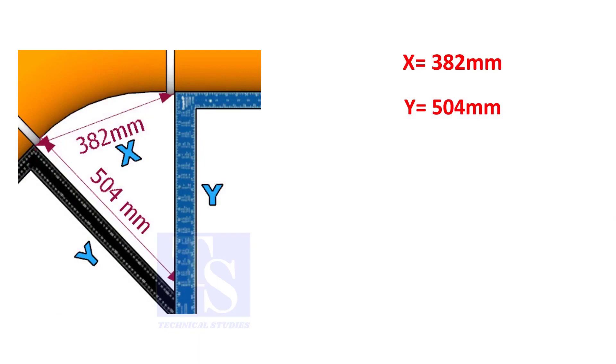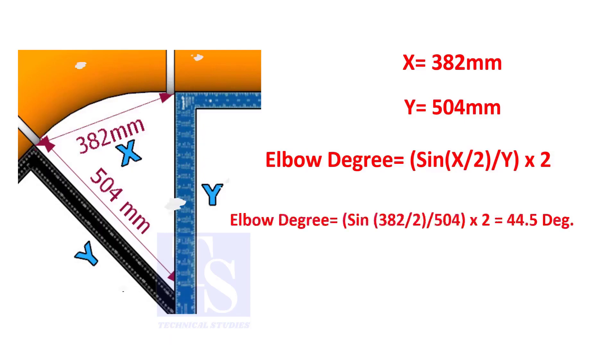Assume that the value of X is 382 and the value of Y is 504. Divide the half value of 382 by 504 and convert the value to sine. Then multiply by 2.